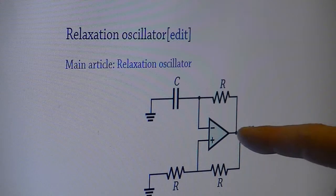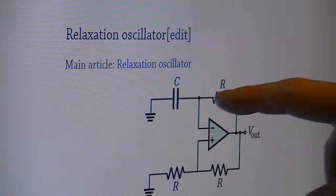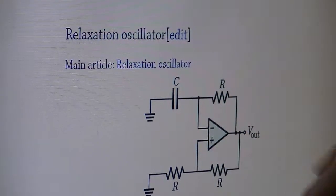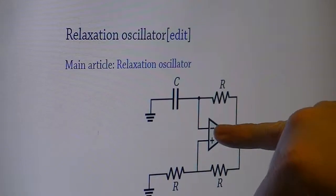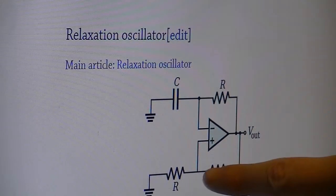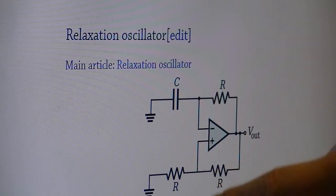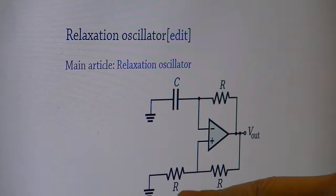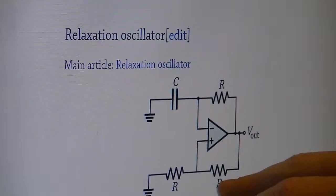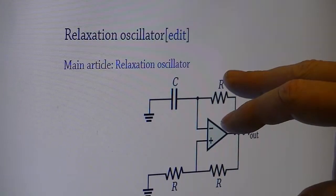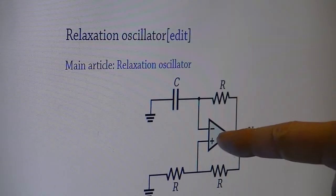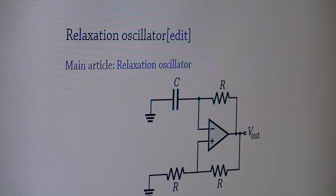In this case, the output of the op amp is going back through both of these resistors to the inverting and non-inverting inputs. There's a resistor divider going to ground, just dividing the voltage in half. You know it's half because all three resistors are marked as R, so they all have the same value. On the inverting input we have an RC filter, which in this case is going to cause an oscillation.